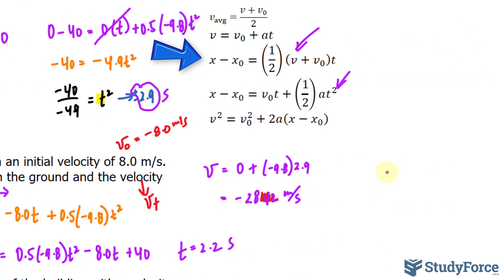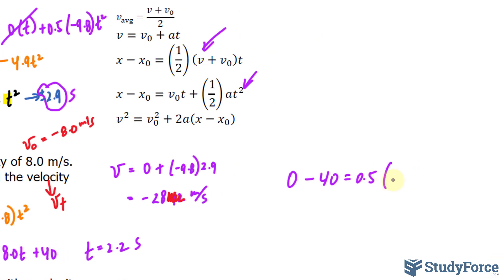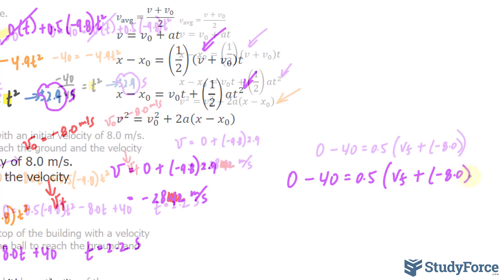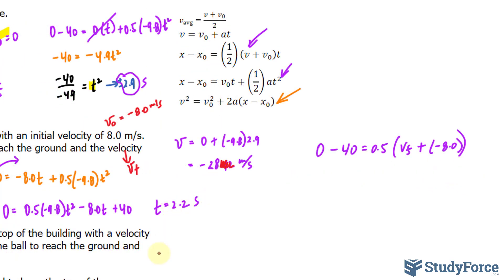We have the final x as 0. The initial as 40 is equal to 0.5. The v final plus the initial velocity, which was negative 8.0. And the time we just found, we wrote down 2.2. But remember, you don't want to use any rounded numbers while you do the other problems. Instead of 2.2, I believe it was 2.15 before rounding. So use that. 2.15.